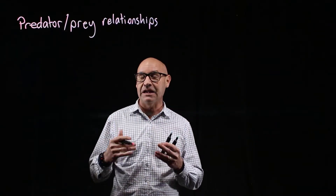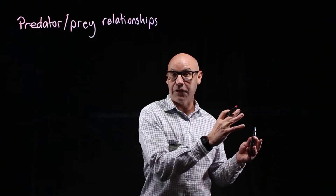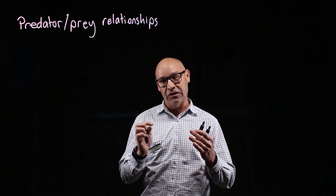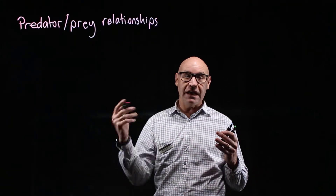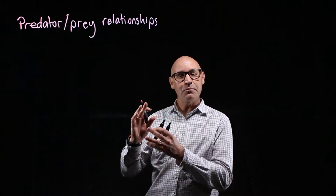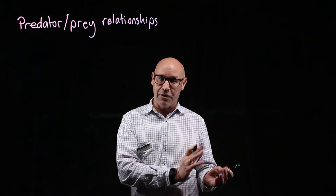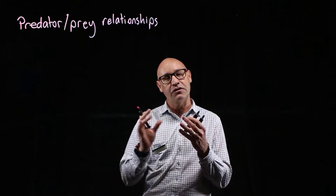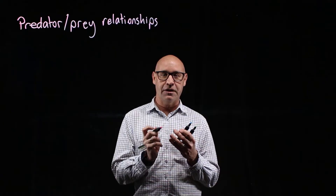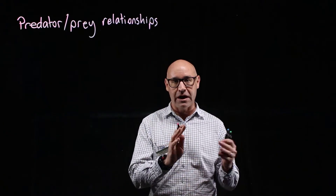A predator is an organism that kills and eats another organism, and the prey is the organism that gets eaten by the predator. We're able to look at the populations of predators and prey and see that the two are interrelated — they're dependent on each other — and we can express that in a predator-prey graph.